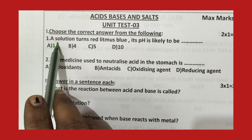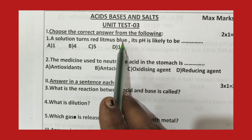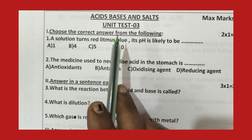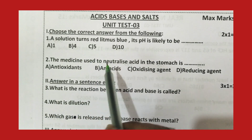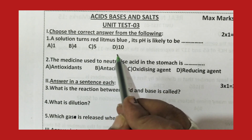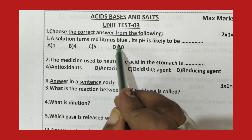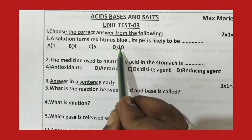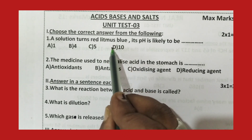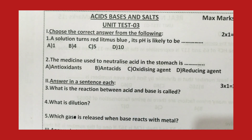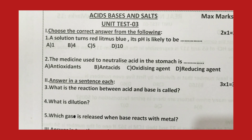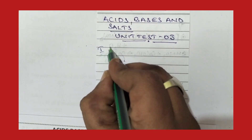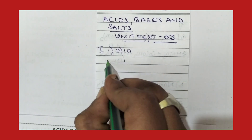The first question is: a solution turns red litmus blue — its pH is likely to be? When red litmus turns blue, it means the solution is a base. pH 0 to 6 is acidic, 7 is neutral, and 8 to 14 is basic. So the right answer is option D, that is pH equal to 10.